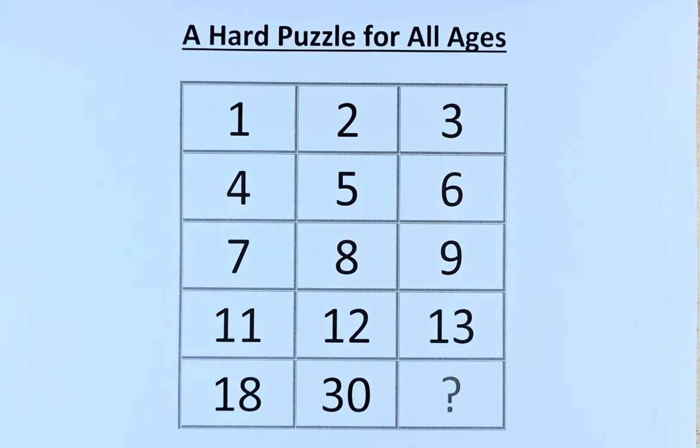If you look at the row 1, 2, 3, it doesn't make sense. 4, 5, 6, it could be done but it's quite difficult in the sense that it's all increasing by 1. So I suggest that we go to the column.